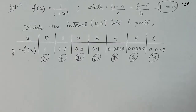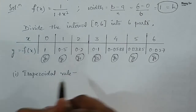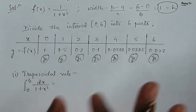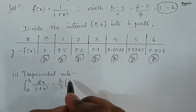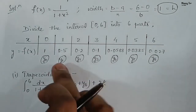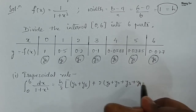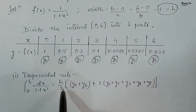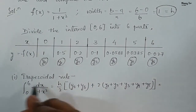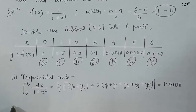First, applying the trapezoidal rule to ∫₀⁶ dx/(1+x²): the formula is h/2 × [(y₀ + y₆) + 2(y₁ + y₂ + y₃ + y₄ + y₅)]. Substituting h = 1 and the y values, we get the value of this integration as 1.4108.